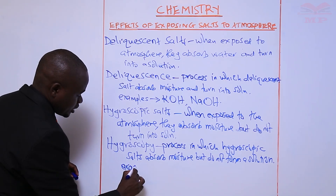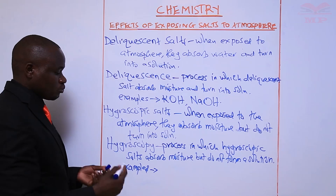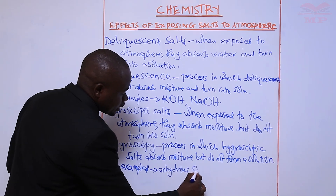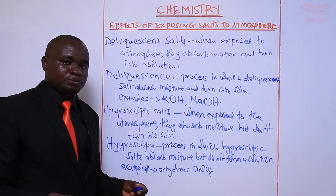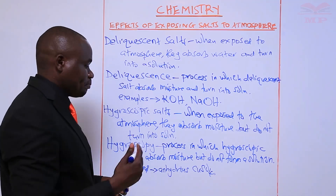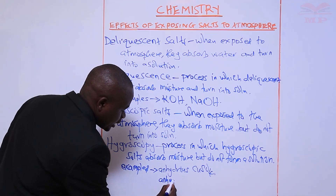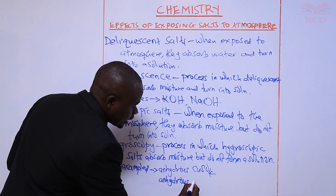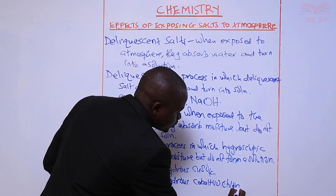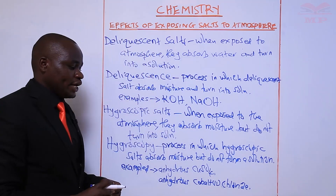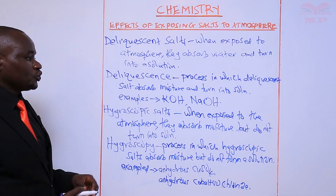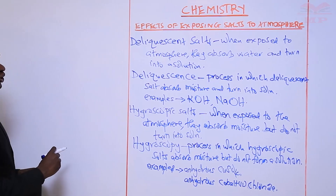Examples of hygroscopic salts: we have anhydrous copper sulfate — when anhydrous copper sulfate is exposed to the air it will absorb moisture but will not form a solution; instead it will appear damp. Another example is anhydrous cobalt(II) chloride — this one also, when exposed to the air, will absorb moisture but will not turn into a solution.